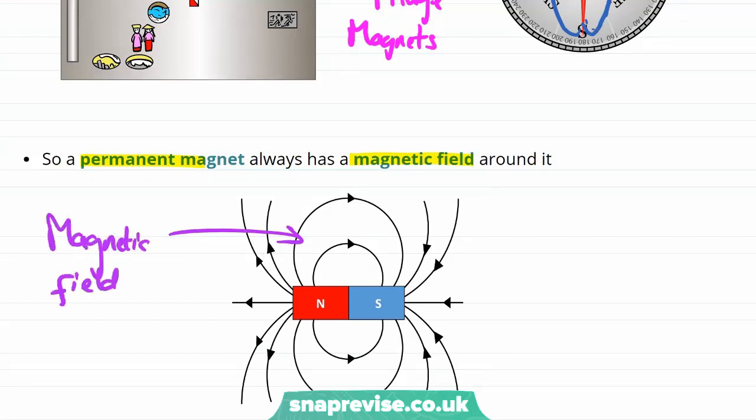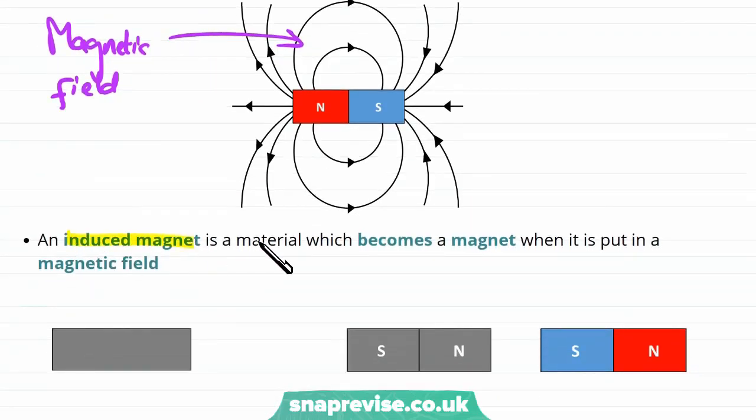We said that there were two types of magnets, permanent and induced. So let's talk about induced magnets now. An induced magnet is a material which becomes a magnet when it is put in a magnetic field.